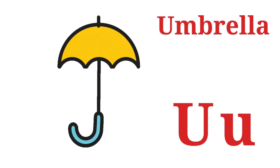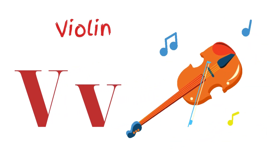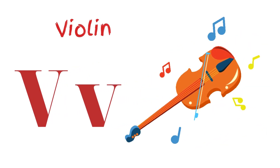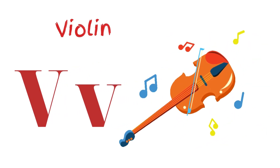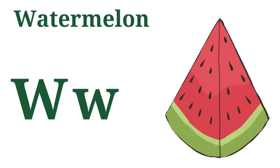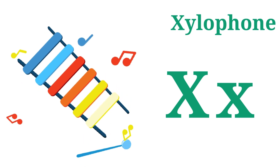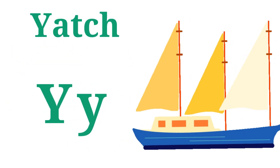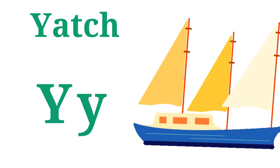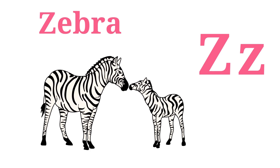U for Umbrella. X for Xylophone. Y for Yacht — Y, Y. Z for Zebra — Z, Z, Zebra.